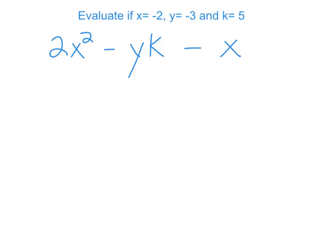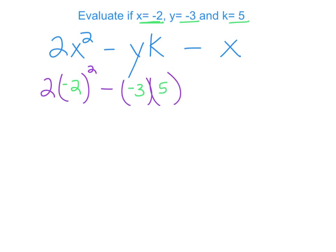Let's try a problem: 2x² minus yk minus x, where x = -2, y = -3, k = 5. First, rewrite the problem filling in the variables using parentheses. So I write 2, then parentheses with negative 2 squared, then minus, then parentheses with negative 3 times parentheses with 5, then minus parentheses with negative 2. That's your very first step — use parentheses and rewrite it.